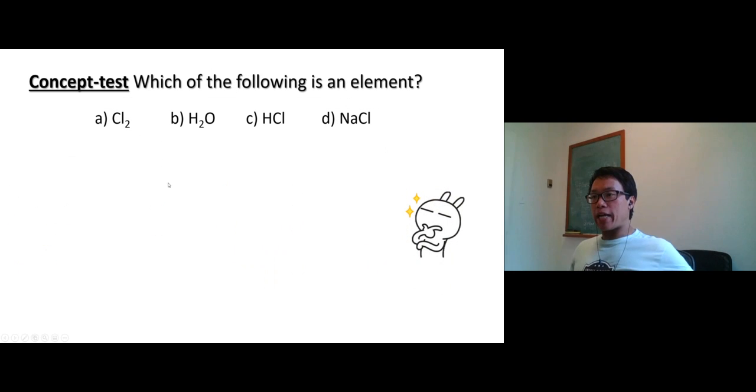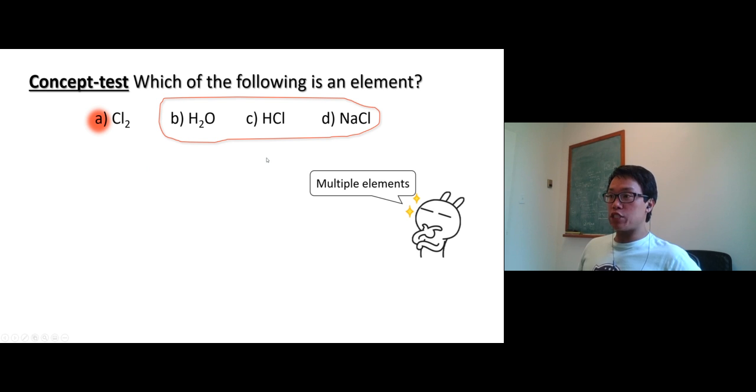Concept test: which of the following is an element? Should it be that hard? That right there, chlorine, so chlorine is an element. The rest have multiple elements, so they are compounds. Some of you said, hold on, chlorine got two chlorine in it. Well, but it's just by itself. It's not multiple elements. Multiple element is called compound. It's just by itself, so it is an element.